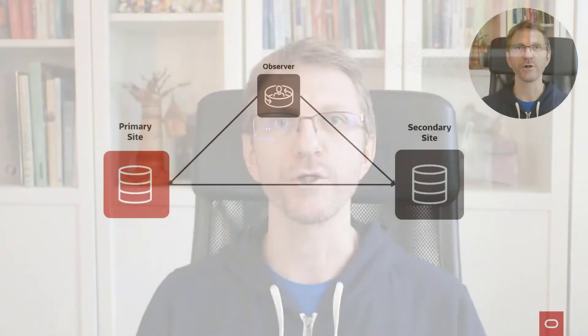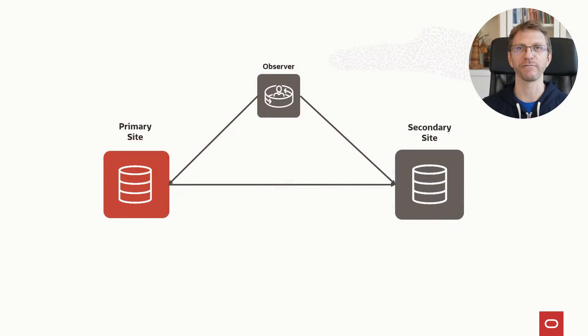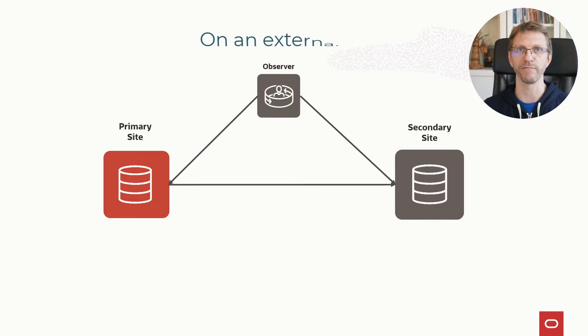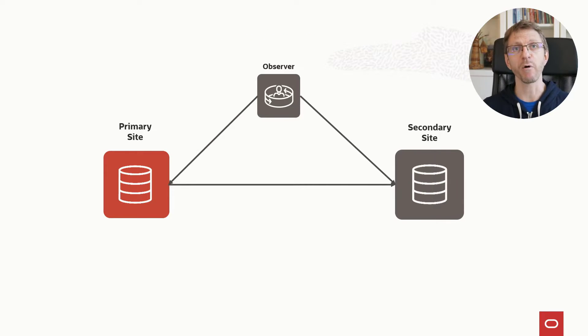We have seen in another video what is the importance of having Fast Start Failover in a Data Guard configuration. The next question would be: where should I put the observer in a Fast Start Failover configuration? Should I put the observer on the primary side, on the secondary side, or on the third side? And how about multiple observers? In this video we will try to understand the best practices of observer placement.